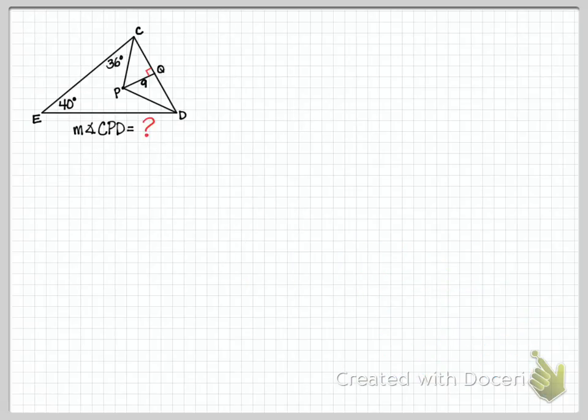Well, here's the beginning of the solution. So here's the first example, the measure of angle CPD. And we notice that they were angle bisectors, so P is the incenter, which means both those angles are 36 degrees. That whole angle ECD is 72. The big triangle ECD has 180 degrees, so we take 180, subtract 72, subtract the 40, we get 68.